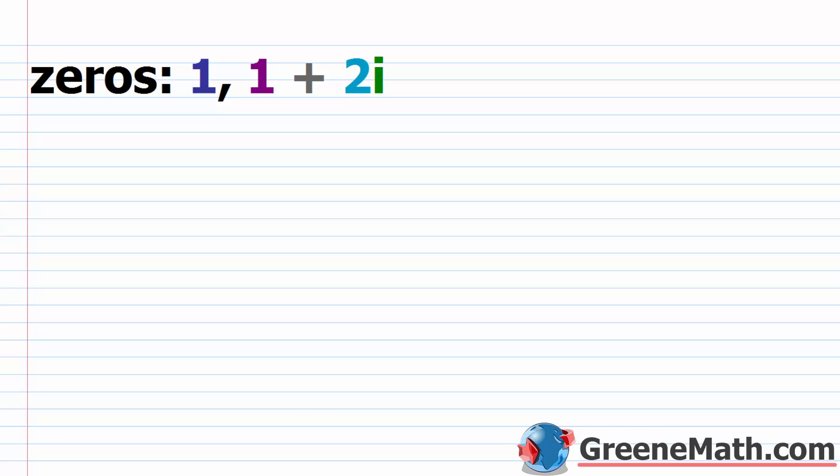tells us that if we have a polynomial function f of x that has only real coefficients, then if some complex number a plus bi is a zero, then a minus bi, its conjugate, is also going to be a zero. So in other words, complex zeros always occur in pairs.